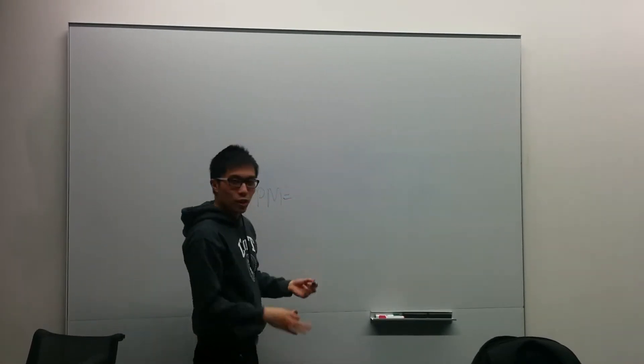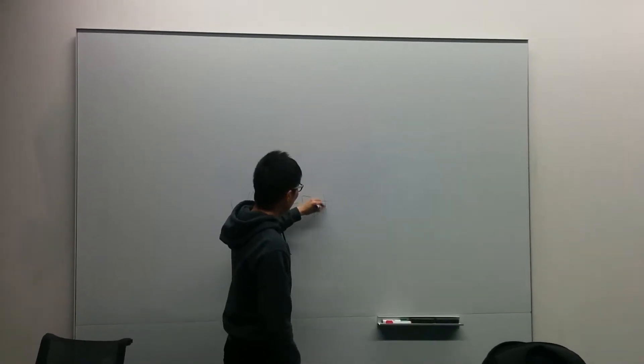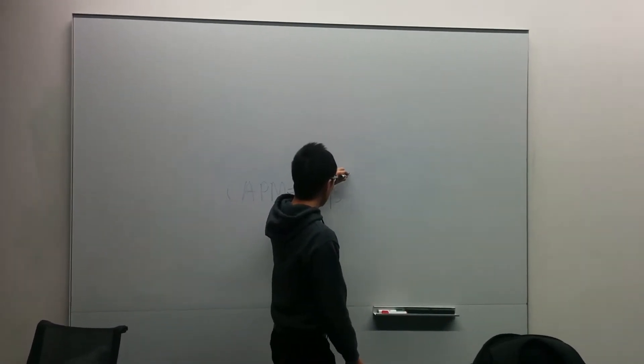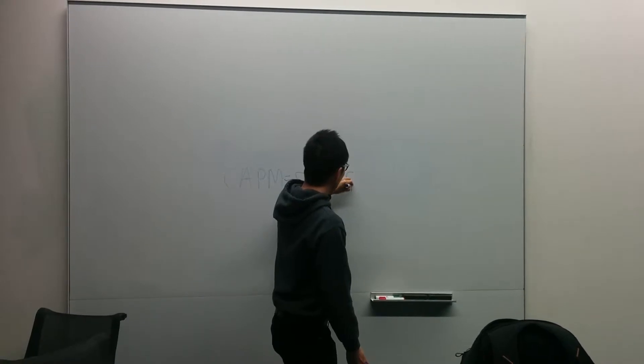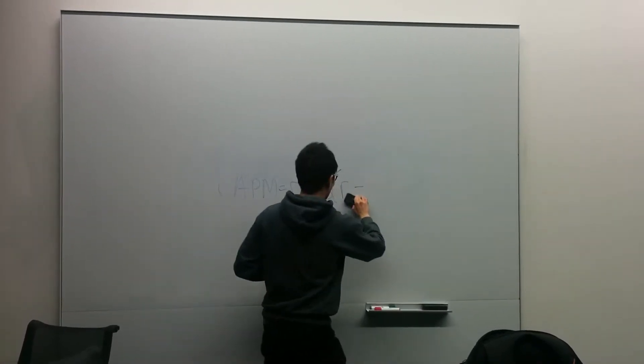Capital asset pricing model. Now essentially I'll write down the formula first and I'll explain it. It's the risk-free rate plus the beta and then the risk premium.